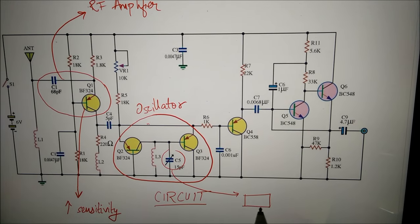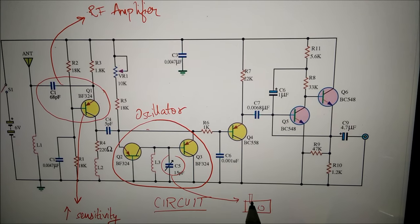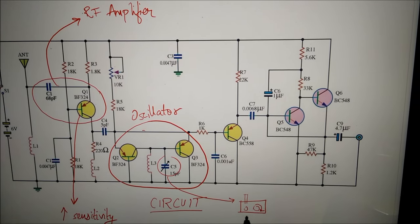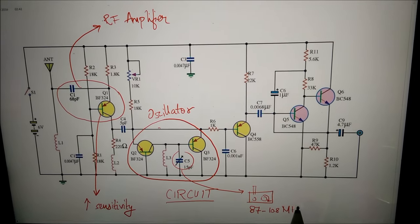We can adjust C5 in the frequency generator circuit to control the frequency from 87 MHz to 108 MHz and to sync the frequency of the generator with that of the incoming signal.